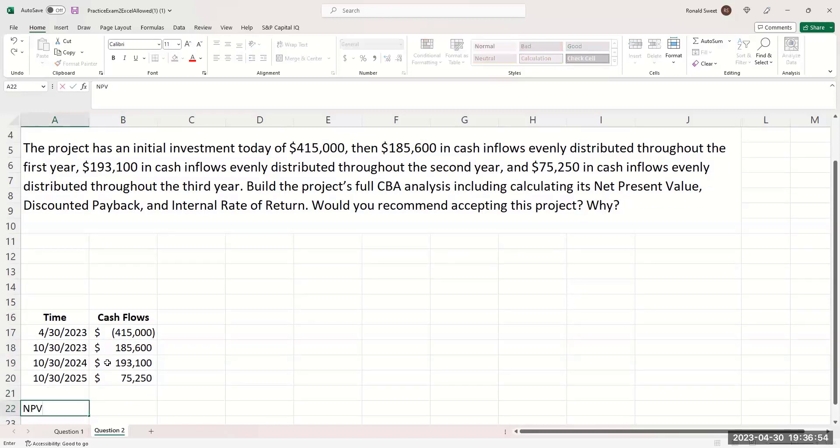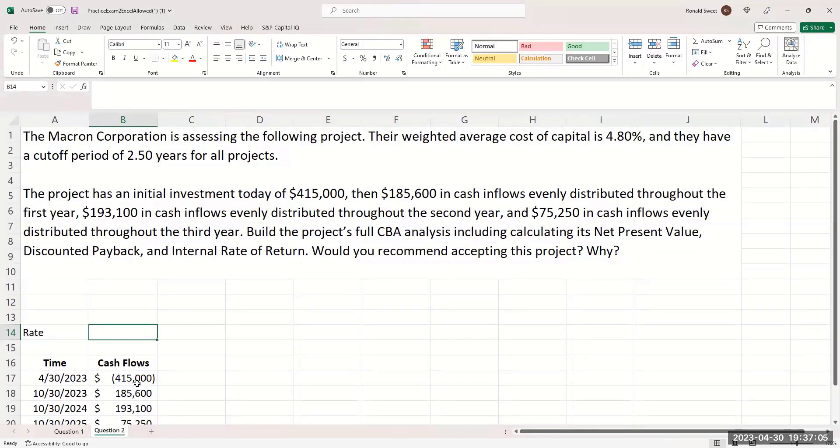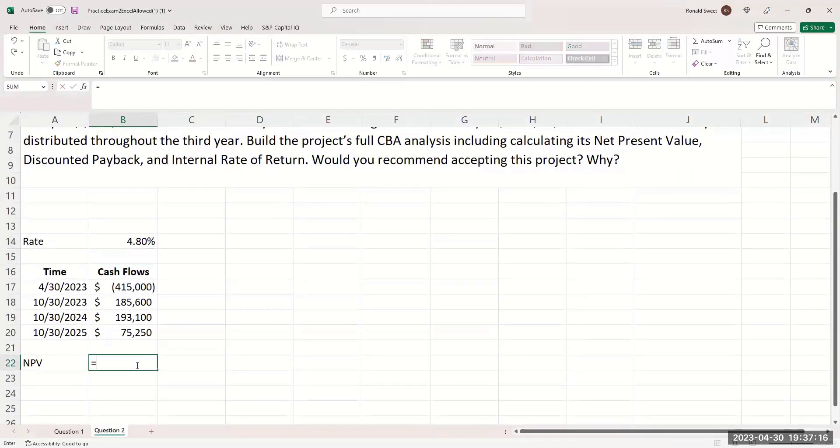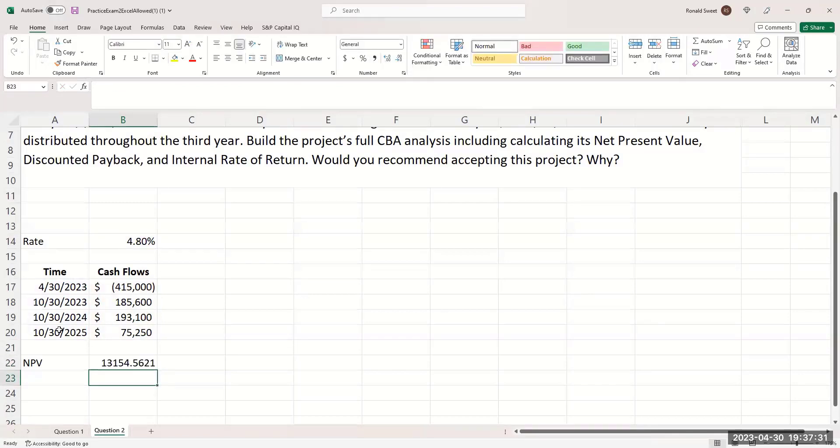All you got to do is put the titles in there. You've got time. So time is going to be equal to today. Then you're going to take that plus 183 for the first year, then the next one plus 365. If you want to adjust for leap year or whatever, I don't care. So let's do the net present value first. You probably want to type the rate in there somewhere. So there's the cash flows, 415, 185, 193, 75. Their rate is 4.8%. Your discount rate, you'll see that up here at the top, the cost of capital.